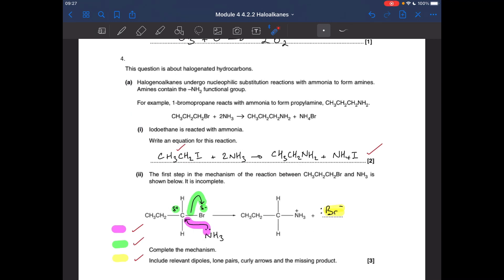Question four. Iodoethane has reacted with ammonia, write an equation for the reaction. So iodoethane has this formula. There's a mark for getting that right. It reacts with two moles of ammonia and it forms this amine and NH4I, ammonium iodide.